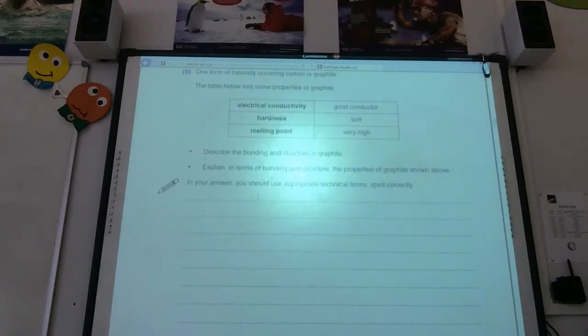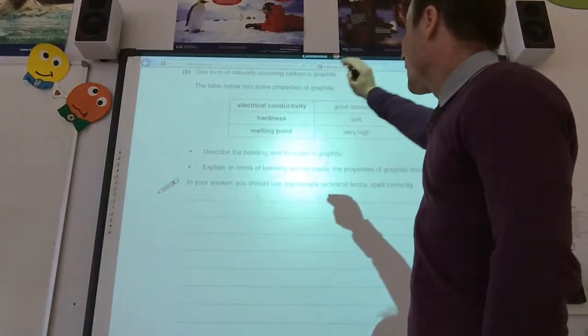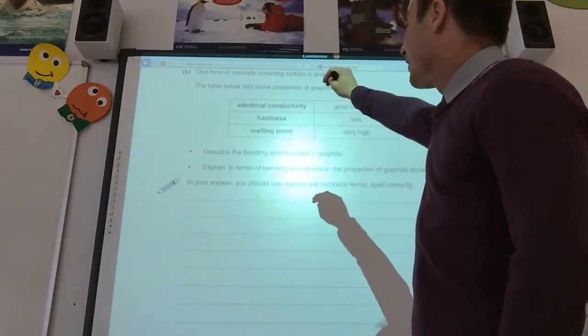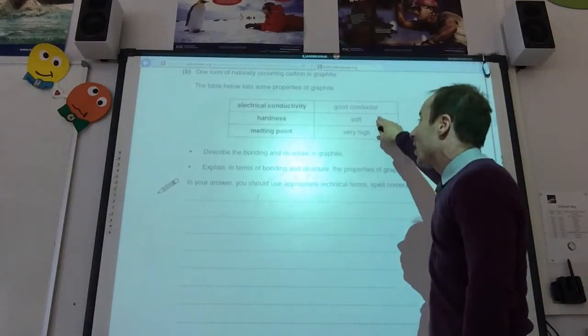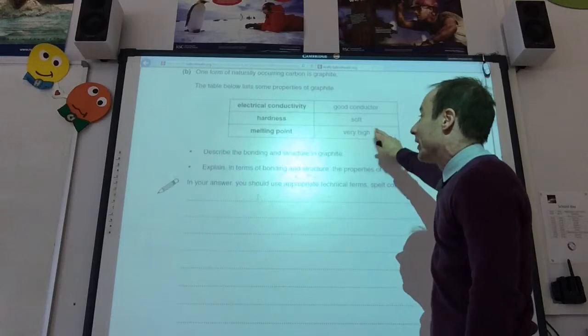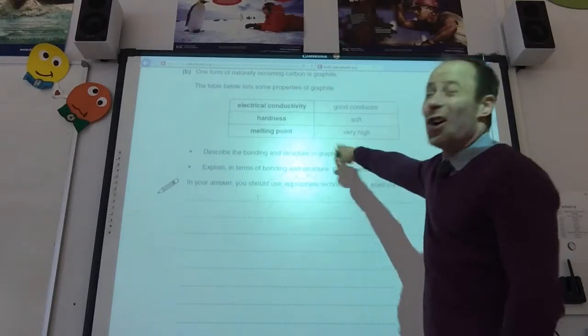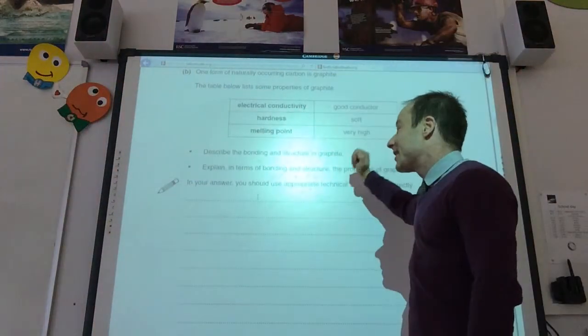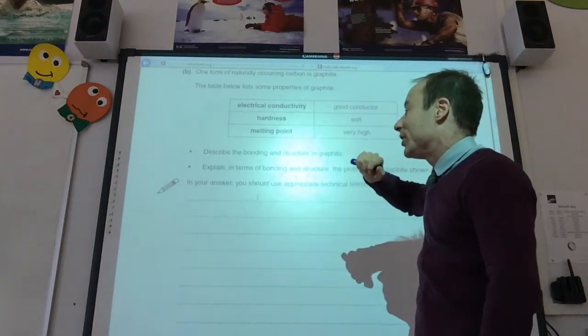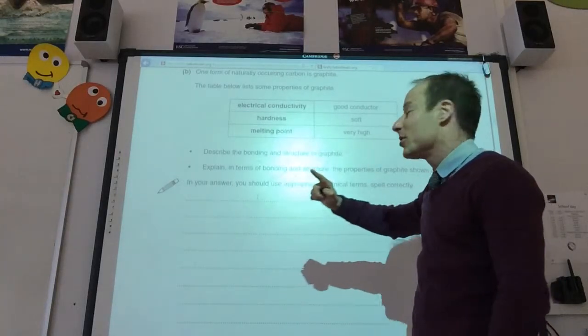Right, we then get into some bonding and structure. Graphite. Table below, there's some property of graphite. So, it's telling me about its conductivity, its hardness, and its melting point. First of all, describe the bonding and structure in graphite. So, whenever a question comes up like this, you must state the type of bonding and structure. Graphite has a giant covalent structure.